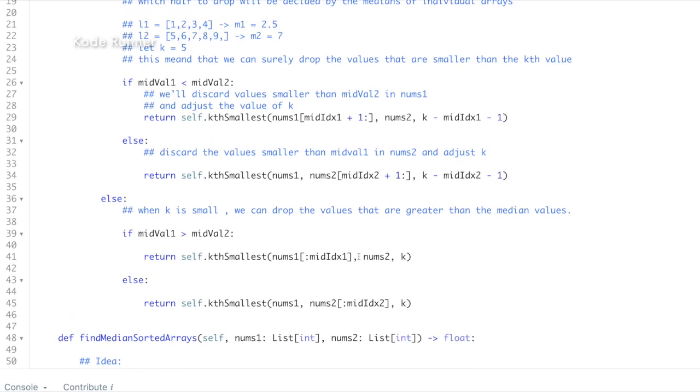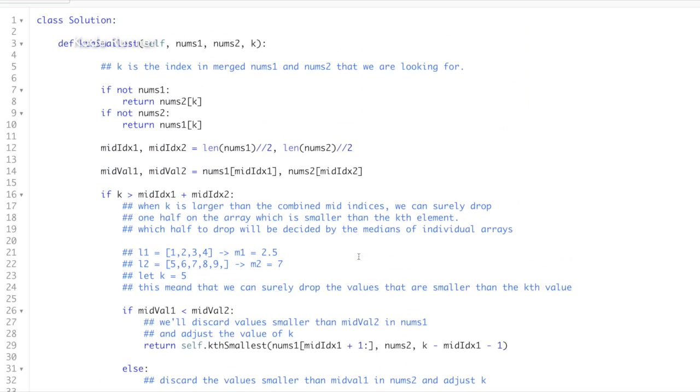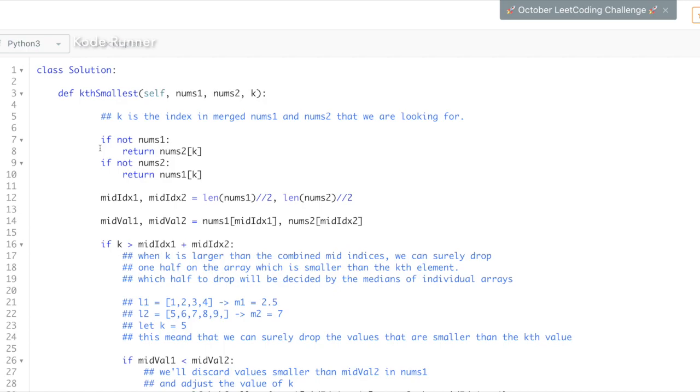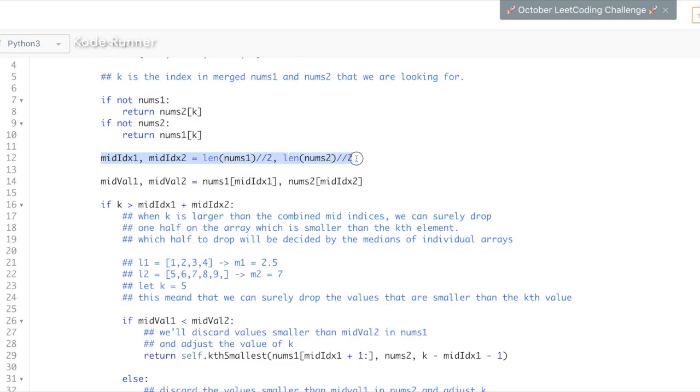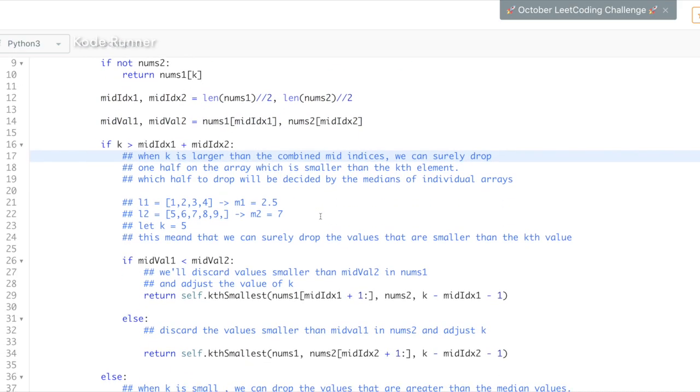As an argument, we pass the list 1 and list 2 and the index in the merged list whose value we are looking for. In the first two statements, we consider the base conditions and see that if any of the array has no values in it, we just return the k index in the another non-empty array. After doing this, we find the mid-index of the individual lists and their individual median values.